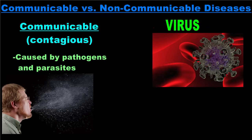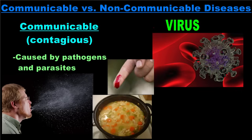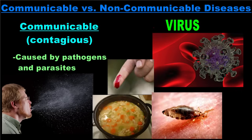The host cell essentially becomes a virus factory that is ultimately destroyed by the virus as it multiplies. New virus particles can be spread through the air when the infected person coughs or sneezes, through contaminated food, bodily fluids, or by insect and animal bites. Once spread, the new virus particles can infect more cells and multiply even further.